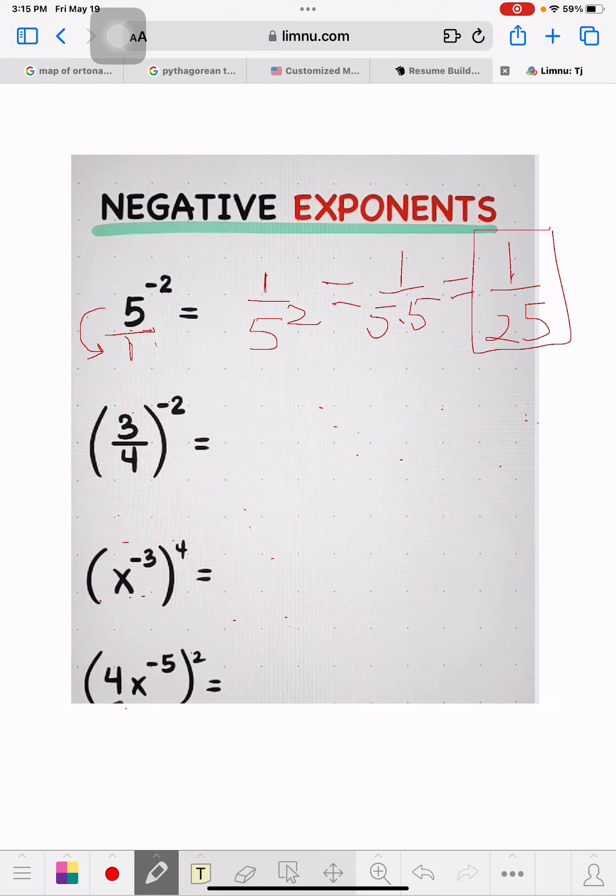Now, let's see the next one. It's 3 fourths brackets negative 2. What I do here, I reverse this. So I flip these, flip this to that way, flip this to that way.